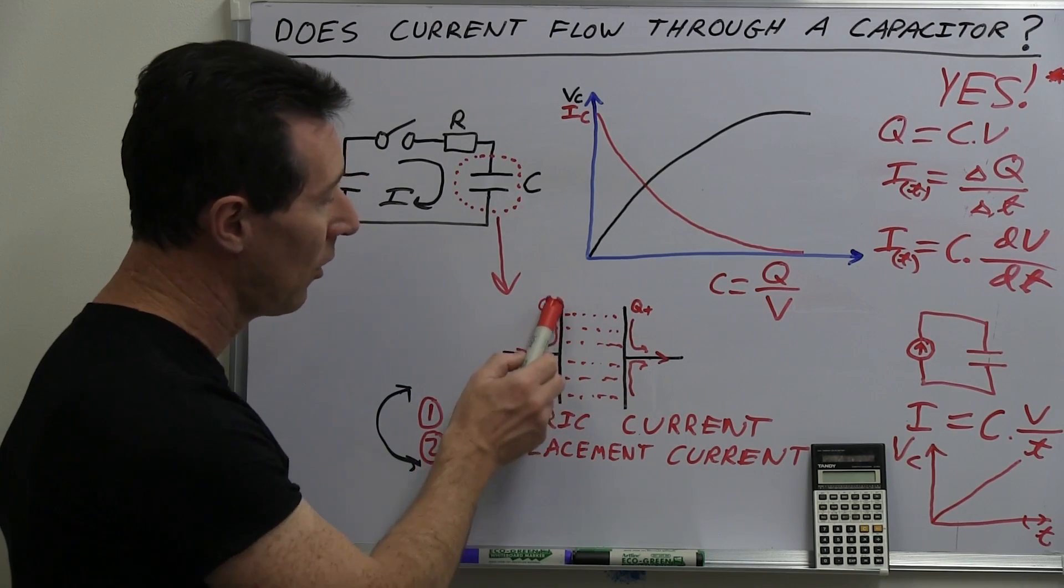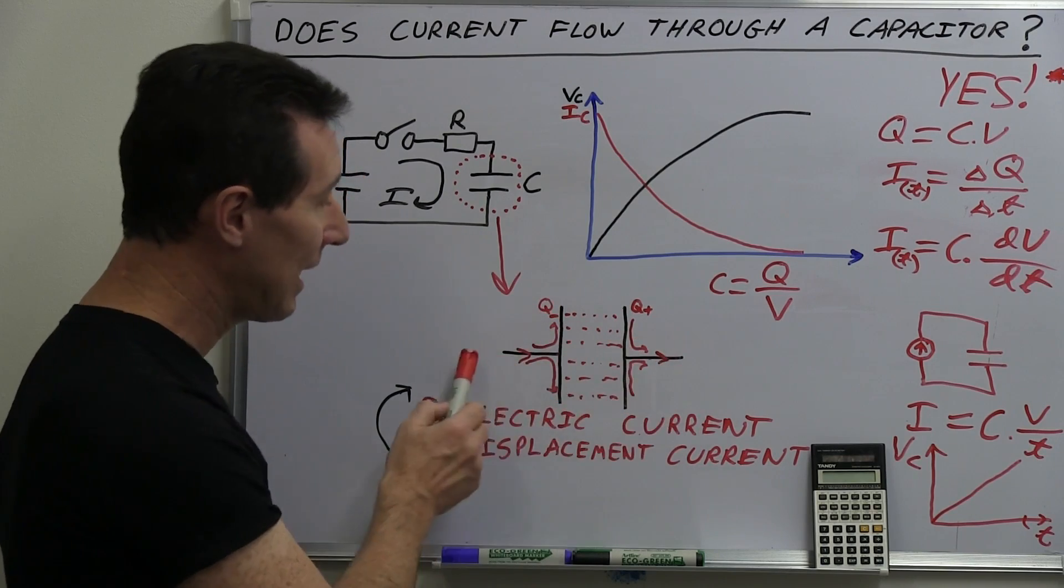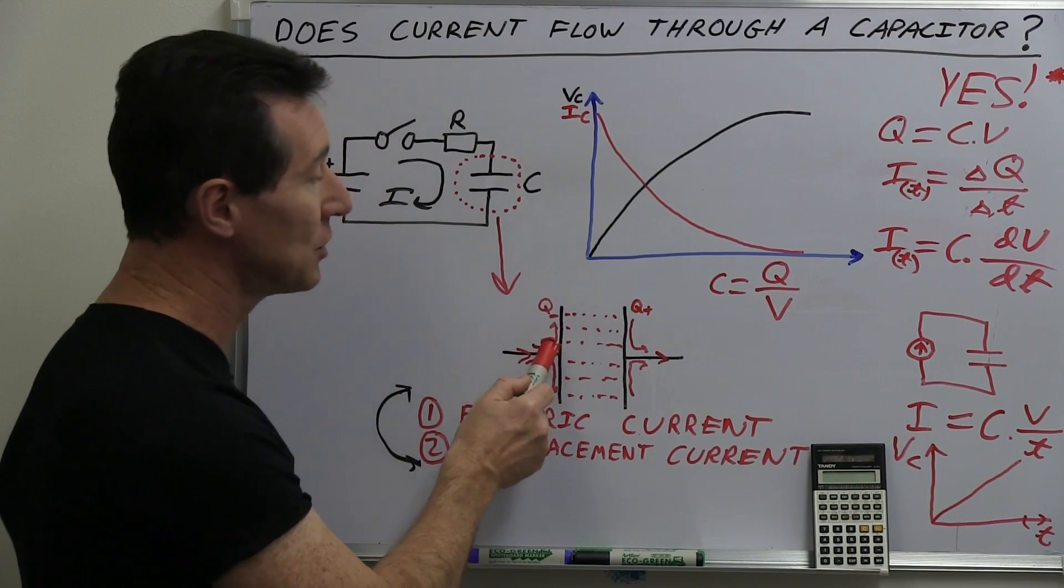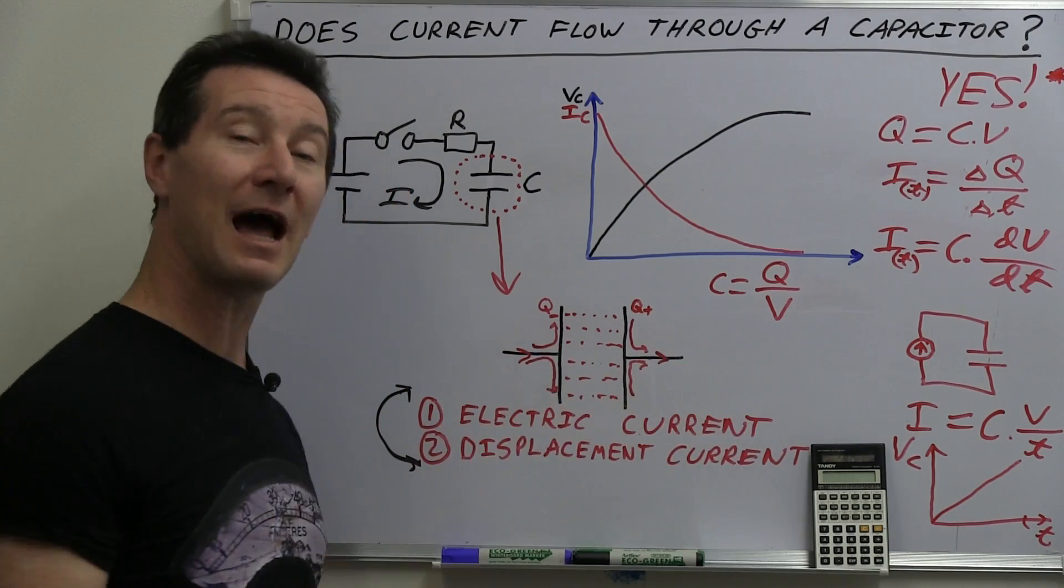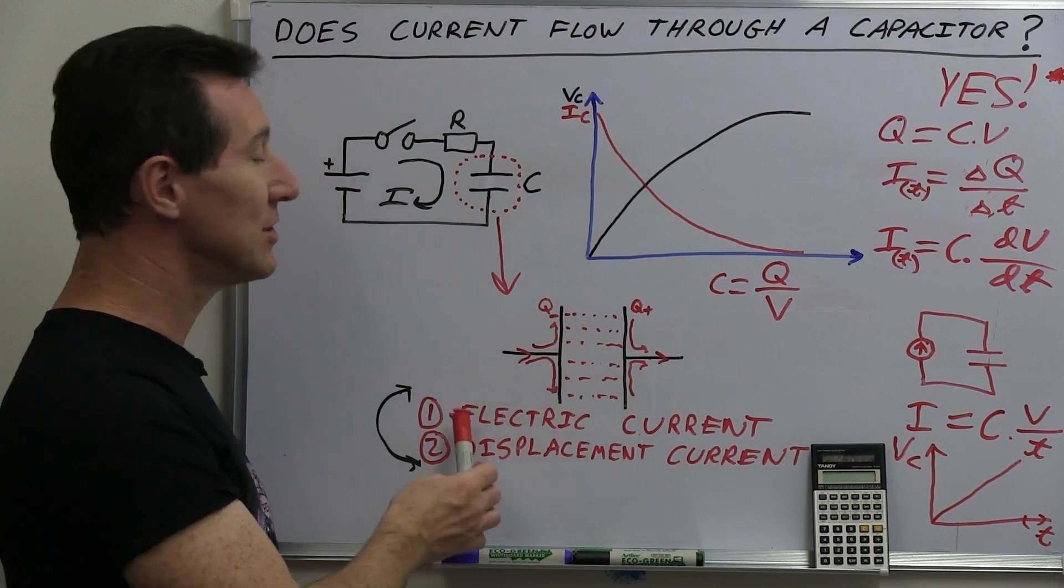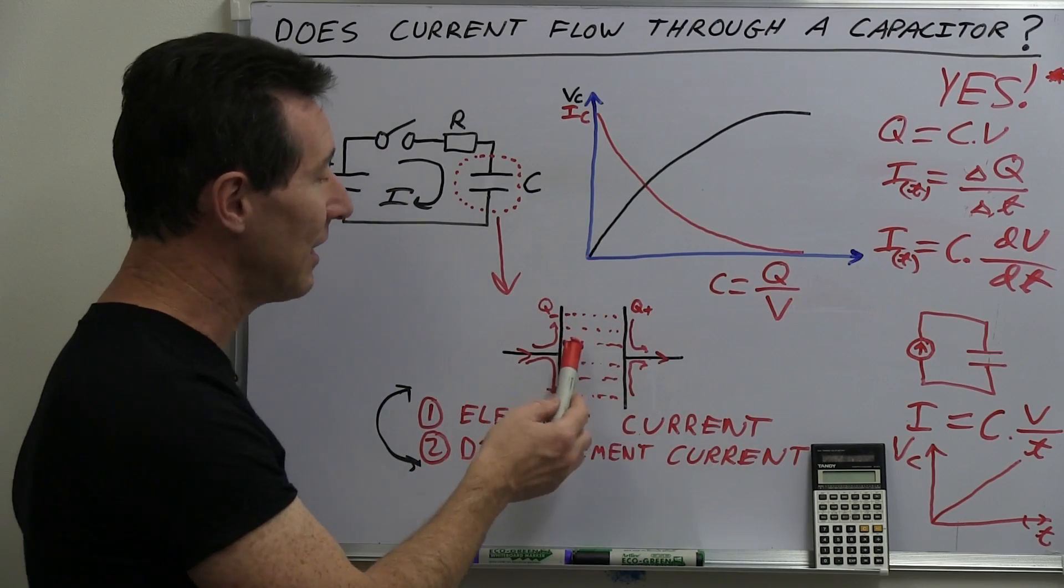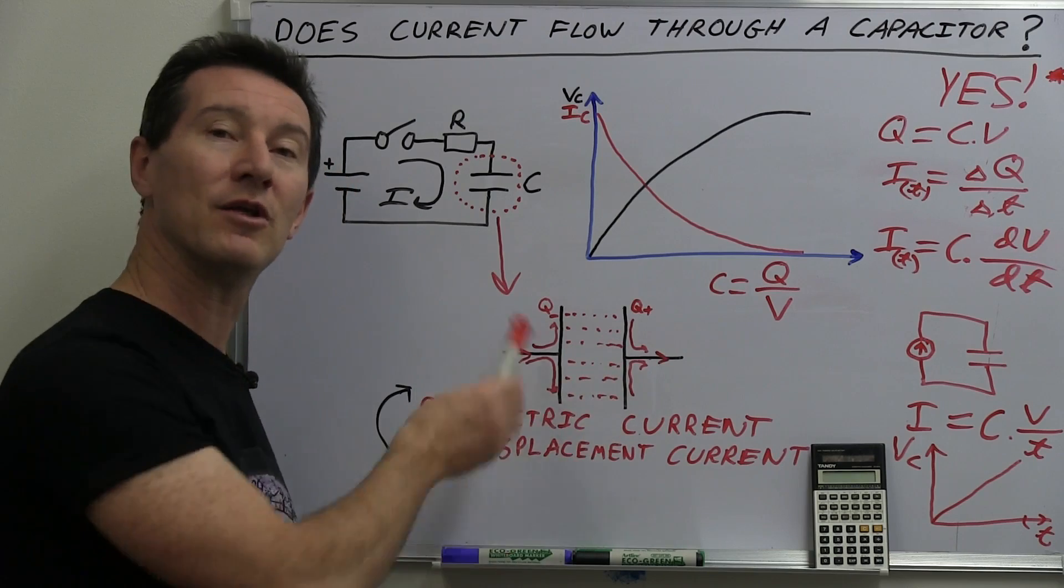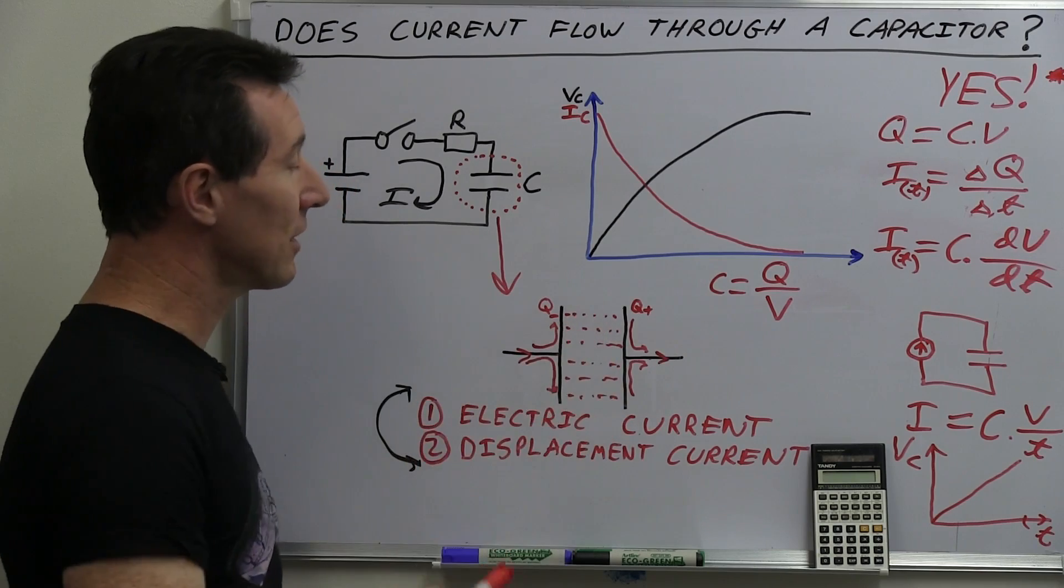And of course the electric current can flow onto the plates like that. And so current is flowing in to one plate and leaving the other. But what actually happens in the dielectric material is not electric current flow. There's not electrons actually flowing through the dielectric material.